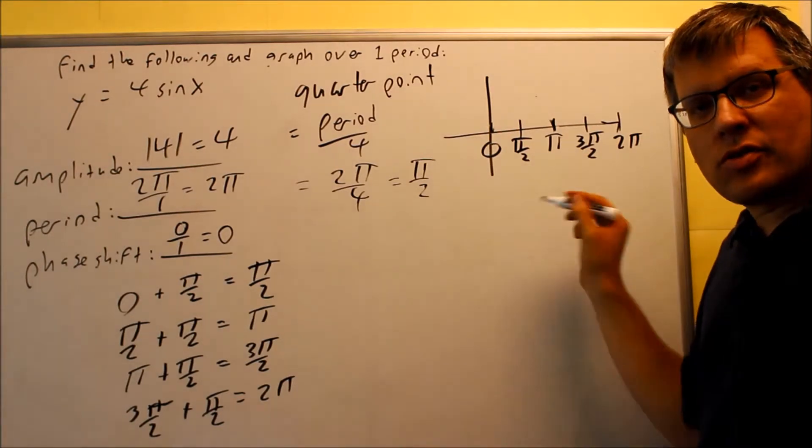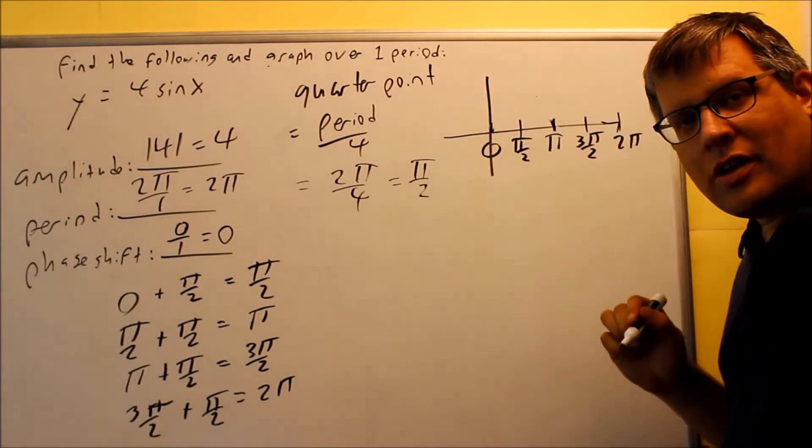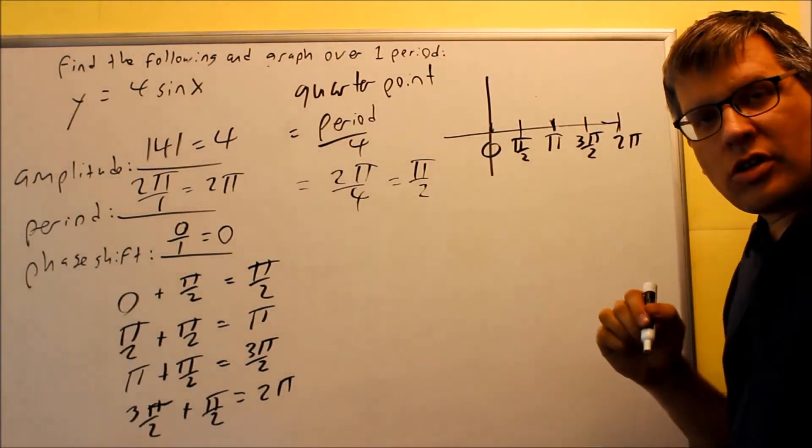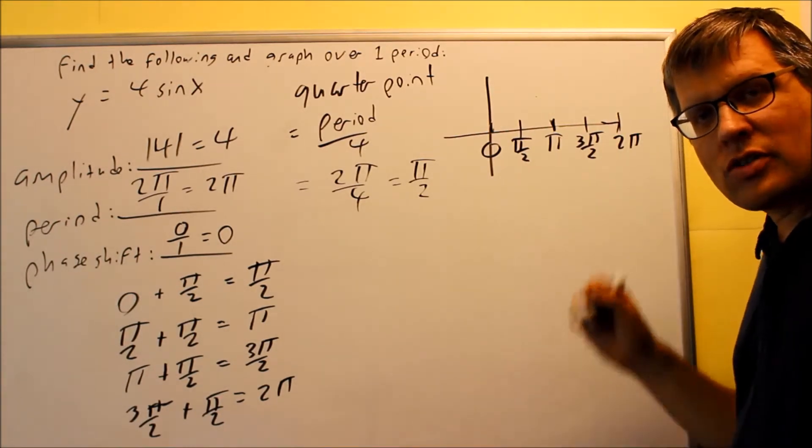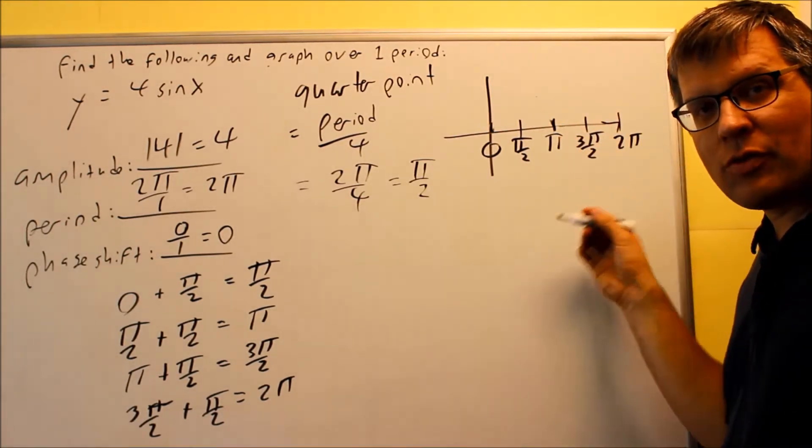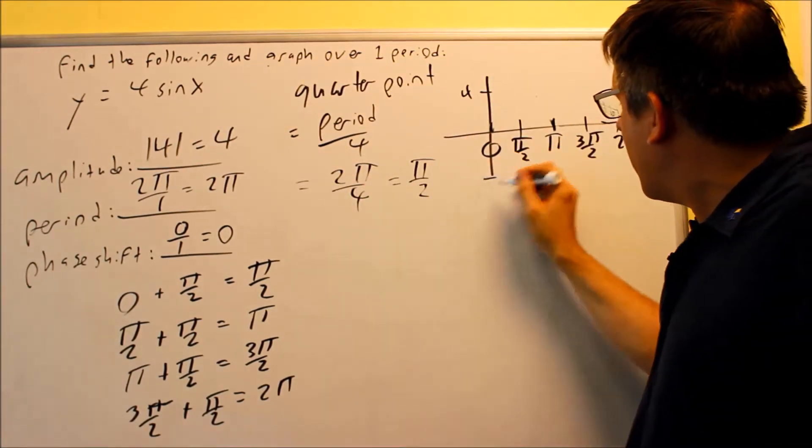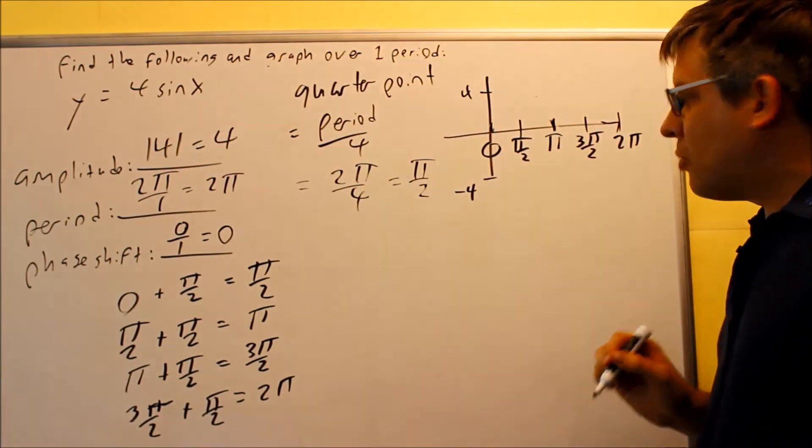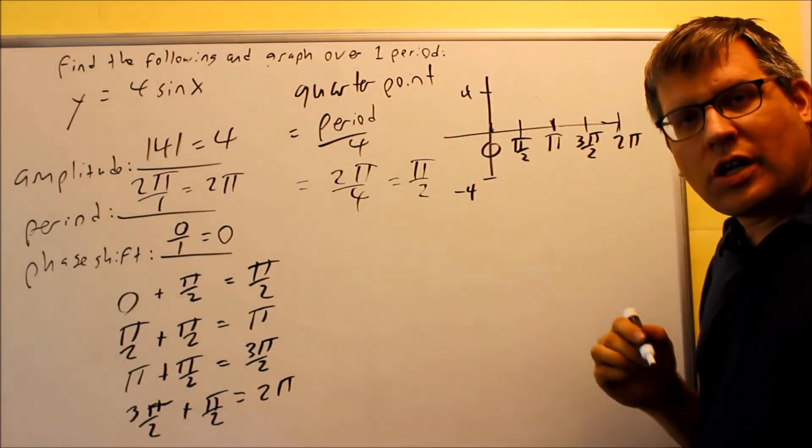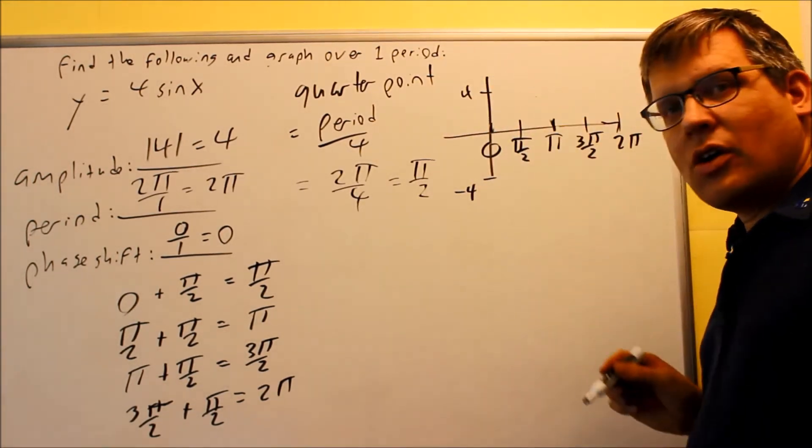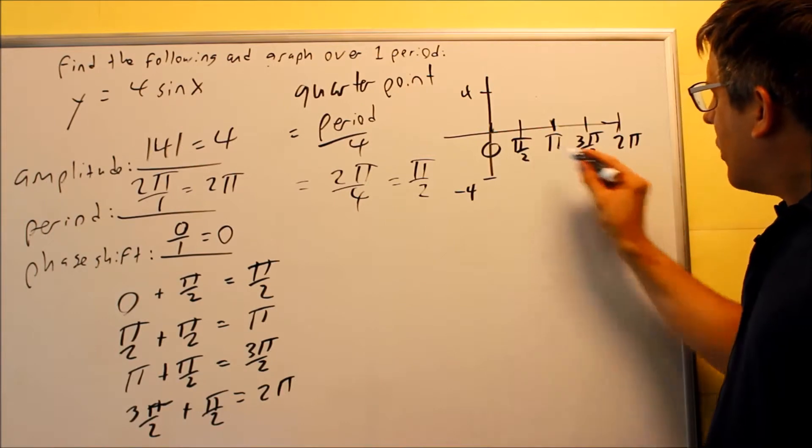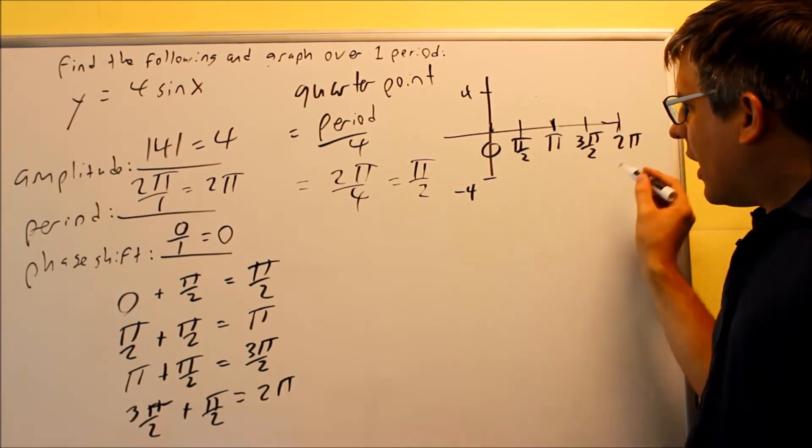Now, notice, these are the same exact key points I had originally when we had the original sine and cosine graphs at the beginning of this section. So, this is basically our base graph, and the only thing we're changing on it is our amplitude is going to now go up to four. So, I have four there, and I have negative four down below. Previously, it went up to one and negative one, but this one goes up to four and negative four. So, there's my key points I had.